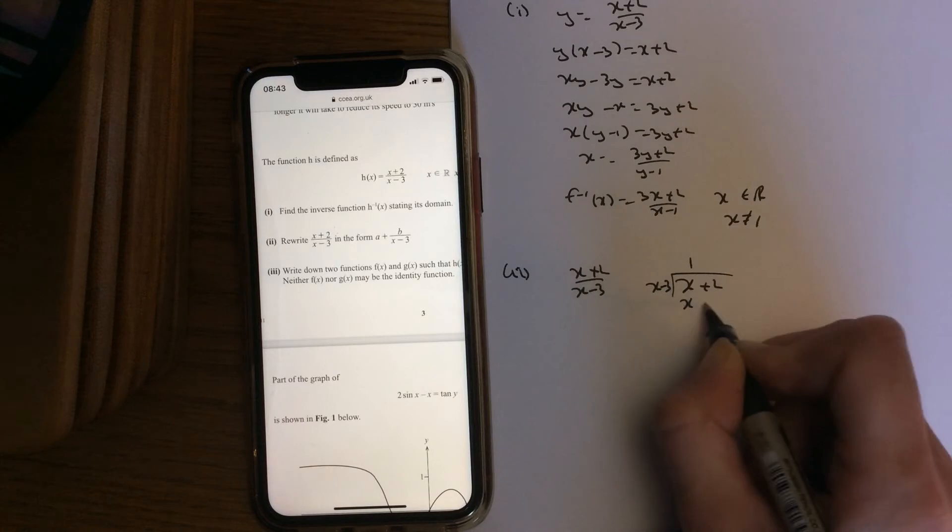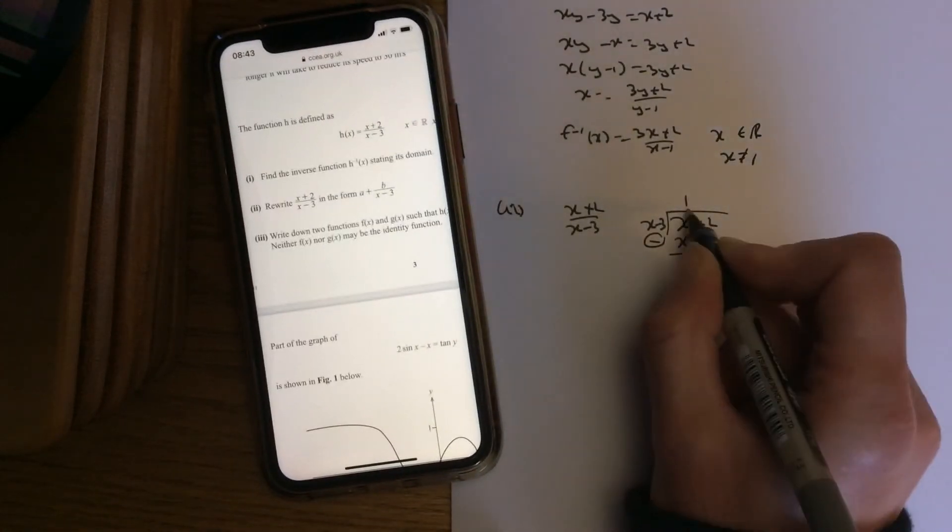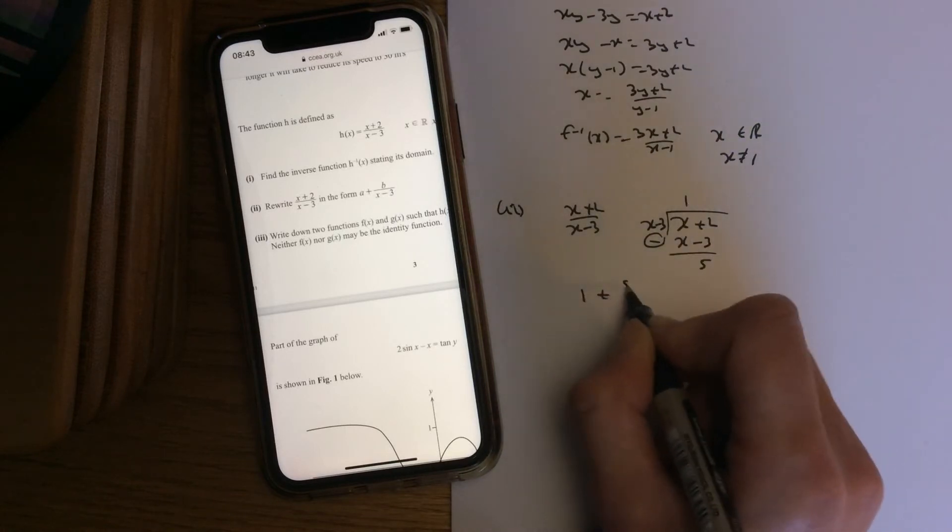Times 1 by the divisor, draw your line, subtract. So I can rewrite this as it goes in once, remainder over the divisor.